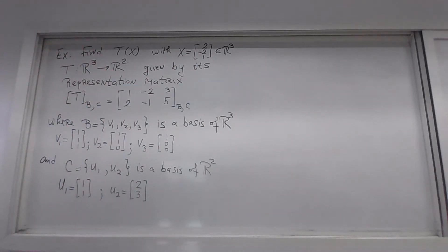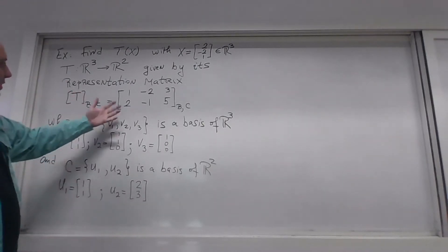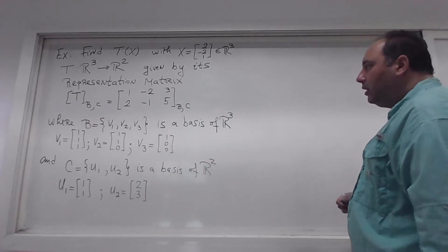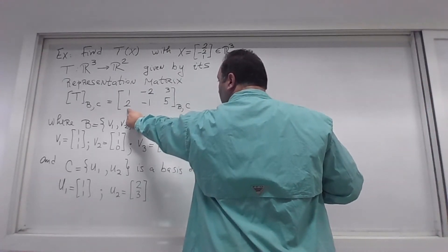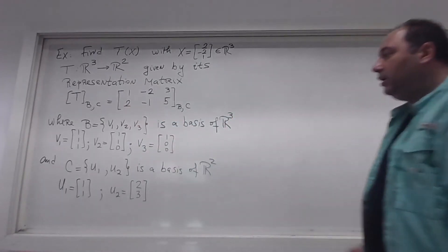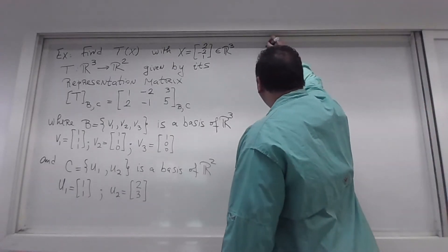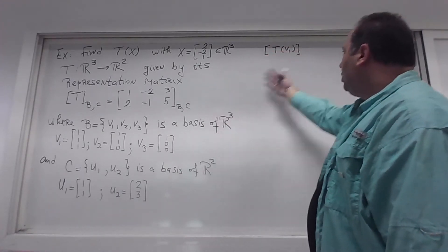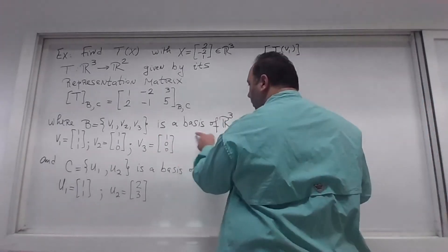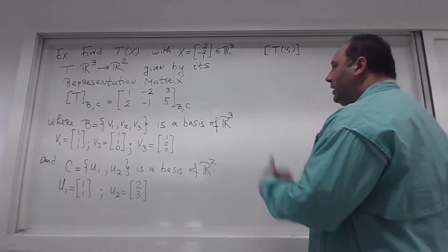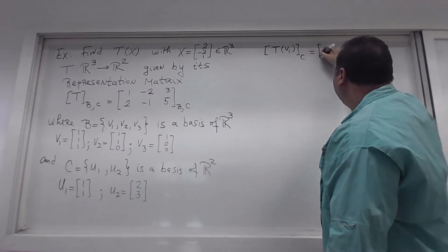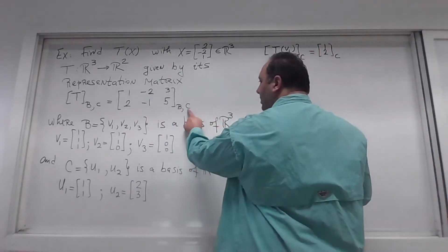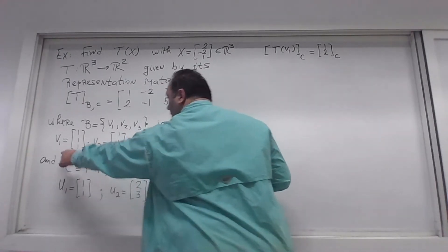Before we start, let me remind you what this representation matrix relative to bases B and C actually means. The first column contains the coordinates in basis C of the image of the basis vector v1. So when building this in general, we apply T to a basis vector from the domain — T of v1 — and then find its coordinates in C. Those coordinates are 1 and 2, so the first column tells us the coordinates in basis C of T(v1).